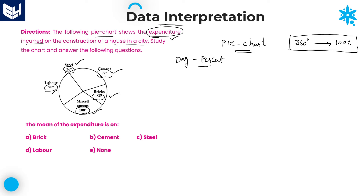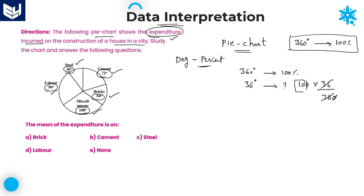For example, if you want to convert 36 degrees into percentage: since 360 degrees equals 100%, then 36 degrees equals 100 × 36 ÷ 360. The zeros cancel and 36 cancels, giving 10%. Therefore 36 degrees is 10 percentage. This is the way of converting degrees to percentage.